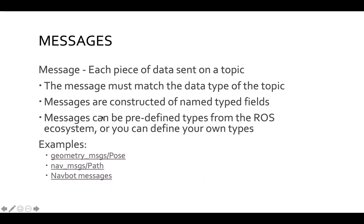A message is each piece of data sent on a topic, and it needs to match the data type of the topic. Messages are typically constructed of named type fields — in C++, these are basically structs: objects that have data members but typically no functions. Messages can be predefined types from the ROS ecosystem, or you can define your own.